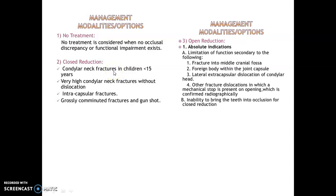Indications for closed reduction: condylar neck fracture in children below 15 years, high condylar fracture without dislocation, intracapsular fracture, grossly comminuted fracture, and gunshot wounds. Absolute indications for open reduction include limitation of function secondary to condylar neck fracture in the middle cranial fossa, foreign body in the joint capsule, lateral extracapsular dislocation, or fracture-dislocation with mechanical obstruction confirmed radiographically.